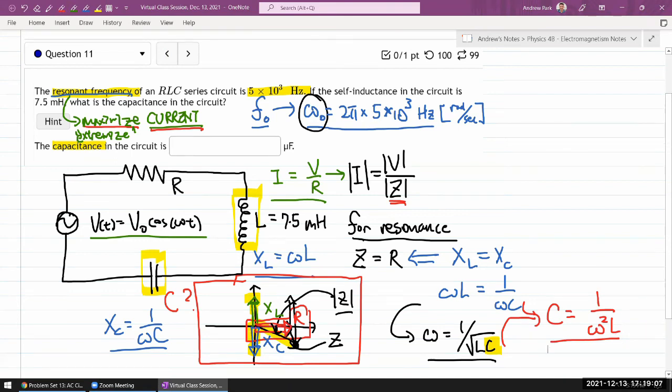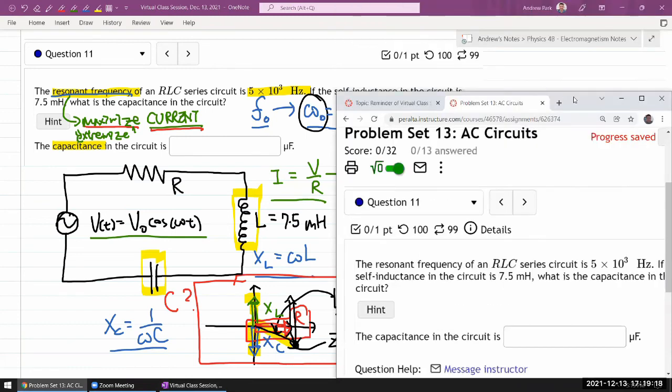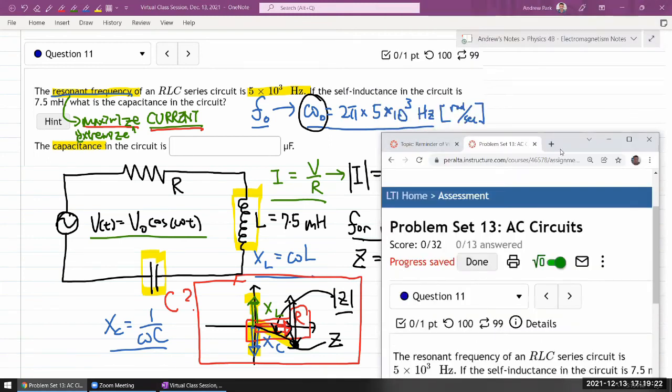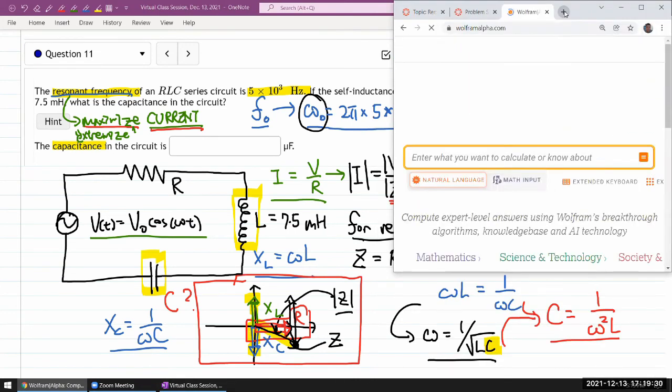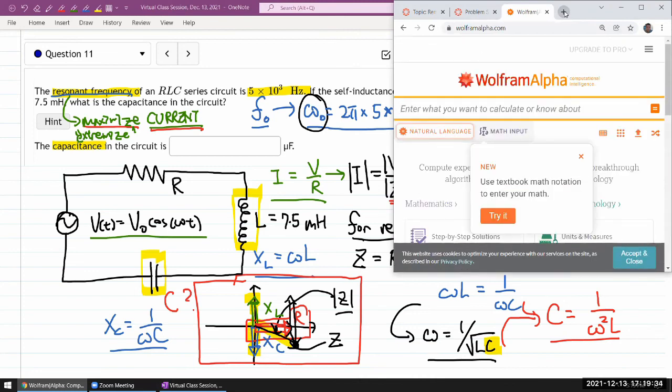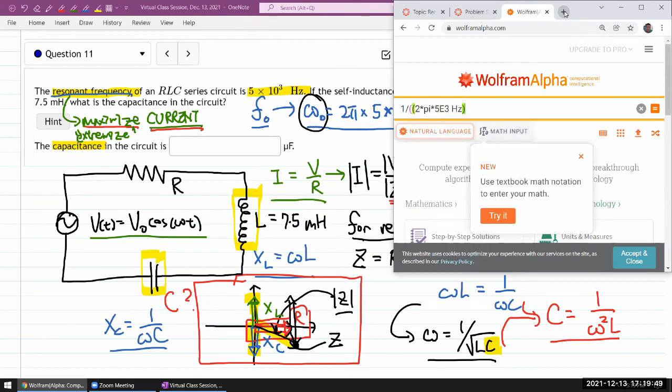Let me do this on Wolfram Alpha so that I can have Wolfram Alpha work out the units. It's a kind of an interesting thing when you're dealing with the circuits. The units can get a little bit gnarly. But the amazing thing there is they also can magically work out. So okay, so I'm in Wolfram Alpha. Let me just type in this information. So 1 over, I want the natural angular frequency of oscillation. So it's 2π times 5E3 Hertz square. That's omega squared times the inductance. 7.5 mH and let me input it and see what kind of unit choices I get.